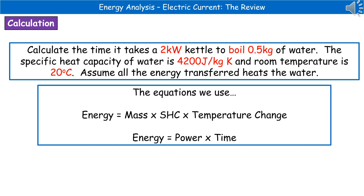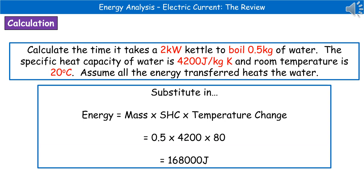Next, recall the relevant equations. Since we have specific heat capacity, go to the data sheet: energy = mass × specific heat capacity × temperature change. We're also finding time, so we'll use energy = power × time. First, calculate the energy using mass × specific heat capacity × temperature change: 0.5 × 4200 × 80, which gives us 168,000 joules.